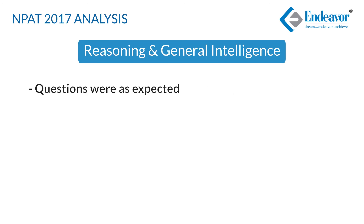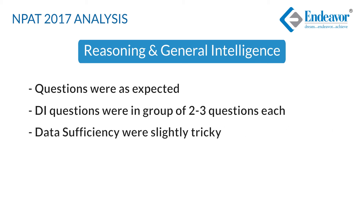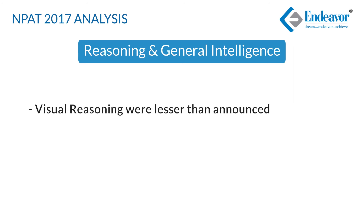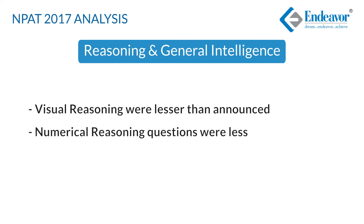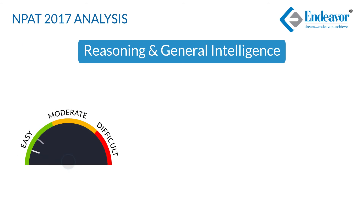The reasoning section was more or less on expected lines, except that the DI questions were not grouped into sets of 5 each — though there were 10 total, they were divided into 3 to 4 graphs of 2 to 3 questions each. Questions on data sufficiency were slightly tricky in nature. Questions on visual reasoning were officially announced to be 4, but students could not find 4 such questions. Questions on numerical reasoning were also fewer. Questions on analytical reasoning and decision making were slightly lengthy, mostly single or in groups of 2, except for decision making which had one set of 5 questions. This would have brought the number of attempts down, though the level of difficulty remained moderate to easy.